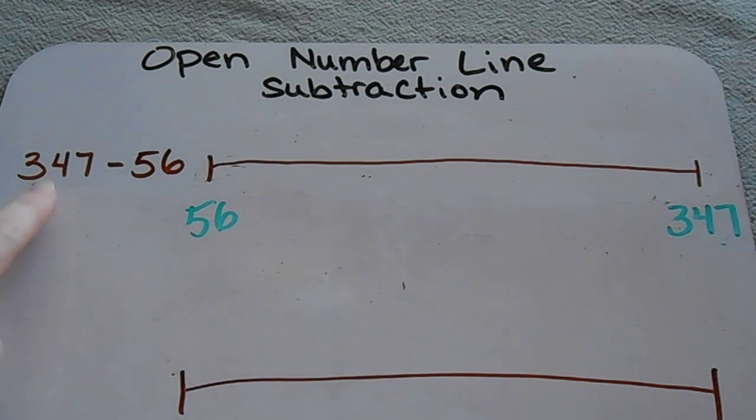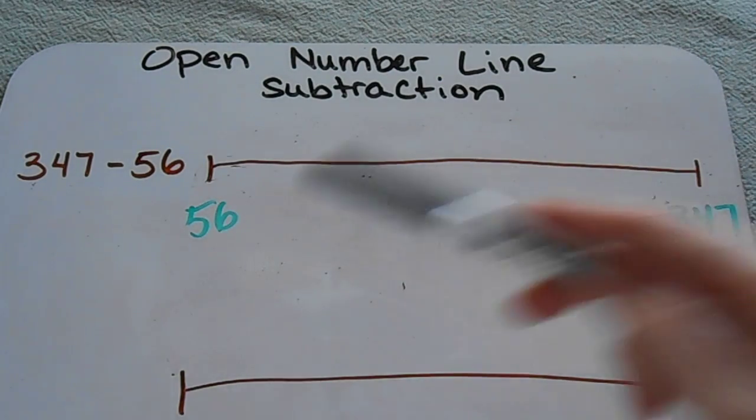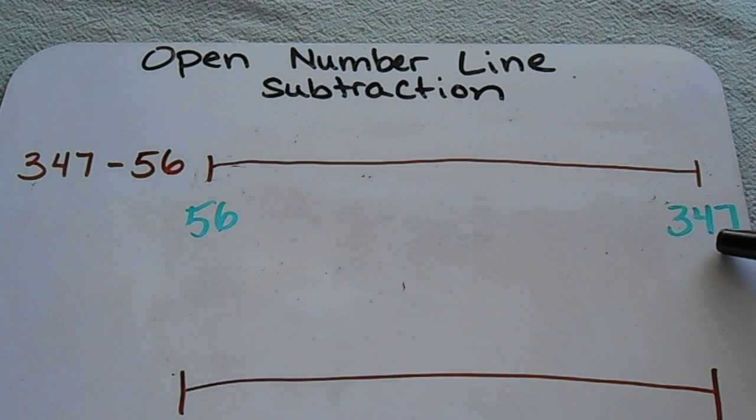So I have my problem here, 347 minus 56, and I have my two numbers set up on a number line, 56 down here and 347.